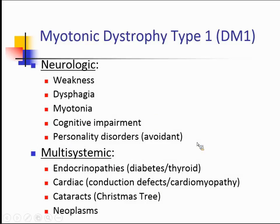Let's talk about the dystrophic myotonias first. The prototypical disease is myotonic dystrophy type one, which is multifaceted. There are very prominent neurologic symptoms: weakness, dysphagia, myotonia, cognitive impairment, and personality disorders. In particular, avoidant personality disorder has been described as fairly common in myotonic dystrophy type one.